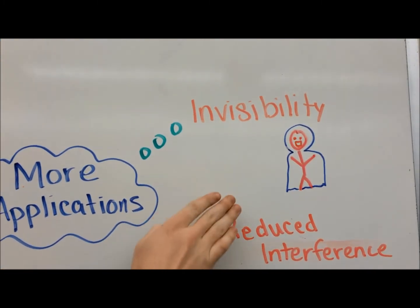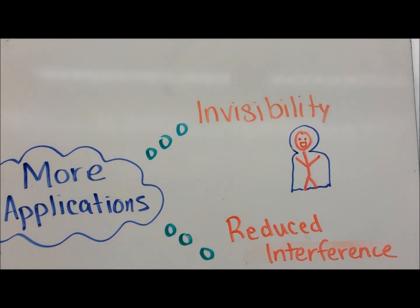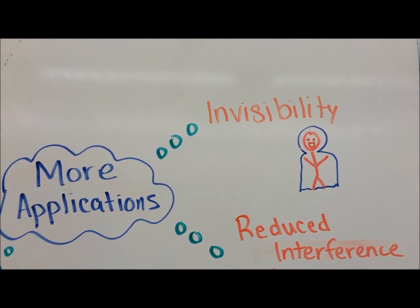Metamaterials can also bend light around an object, which would eventually give us the possibility of creating an invisibility cloak. Let's watch a video.